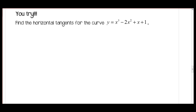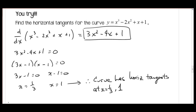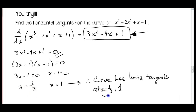Here's the work for the you-try-it problem. Make sure you got the right derivative. To find horizontal tangents, the slope equals 0, so we set the derivative equal to 0 and solve for x. We get x equals 1/3 and 1. That's it for this video — if you have any questions, make sure you ask. Get enough practice to get a good grasp of these concepts, and we'll see you in the next video.